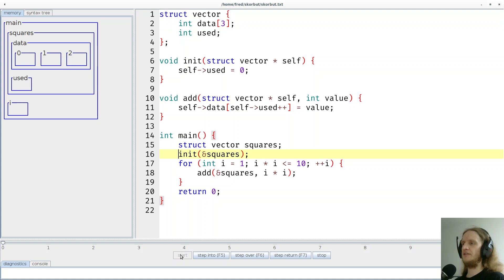So let's immediately jump into the program and I will explain what we see here. On line 15 we just declared a vector called squares, which you can see here. A vector consists of a data array with three elements and a used variable that says how many of those elements are currently in use.